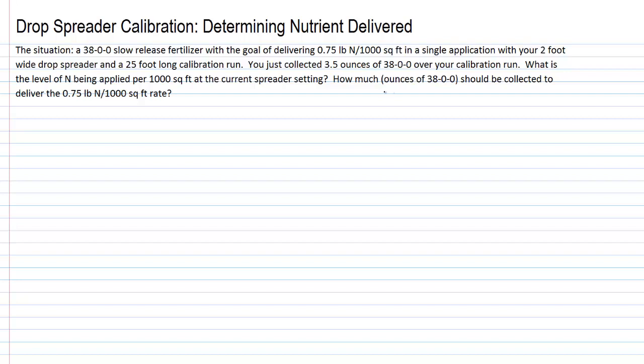It's very unlikely that we will guess correctly at a spreader setting the first time through on the calibration run. So we set up our math and the first thing we always want to do in calibration problems is to determine the square footage in the calibration run. We have two feet spreader width times 25 feet calibration run length equals 50 square feet of calibration area.